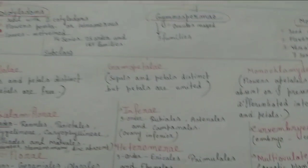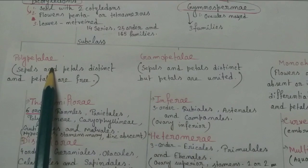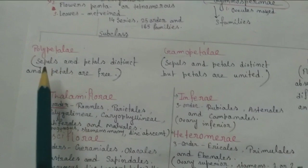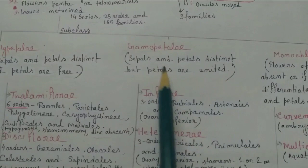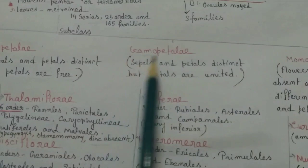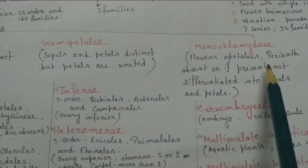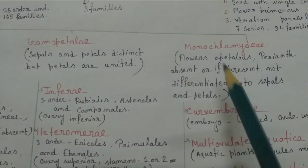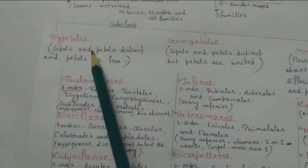Now come to the Dicotyledons. This class Dicotyledons is subdivided into three subclasses: Polypetalae, Gamopetalae, and Monochlamydeae. Polypetalae here the sepals and petals distinct and petals are free. For Gamopetalae, sepals and petals distinct but petals are united. In case of Monochlamydeae they are apetalous, that means petals are absent. Perianth absent or if present not differentiated into sepalous perianth and petalous perianth.